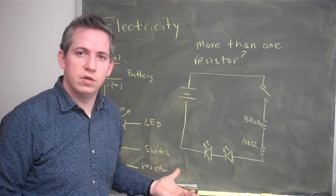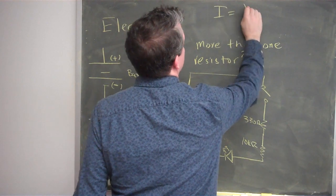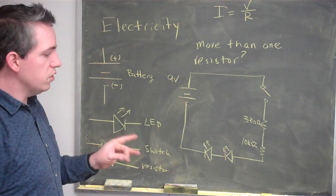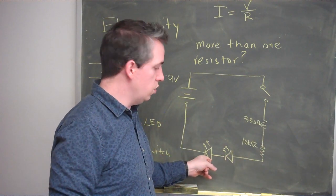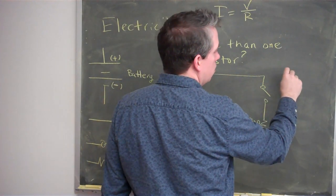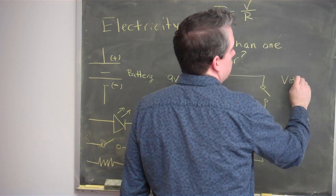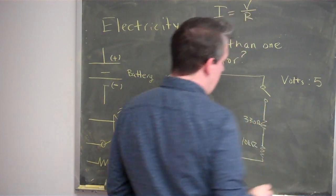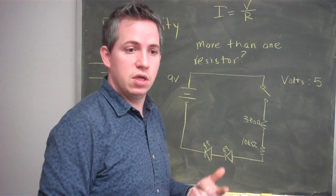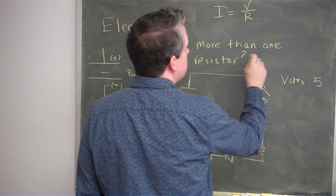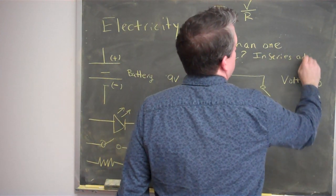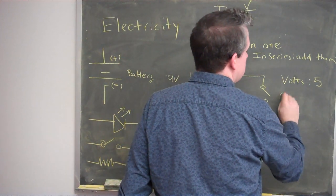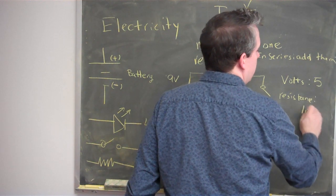One of the questions you can ask yourself is: how do I figure out the current now? Remember Ohm's Law says the current equals the voltage divided by the resistance. So this is a 9-volt battery. The first thing you do is recognize this is a series circuit with two LED light bulbs. So the total voltage would be 9 minus 2 minus 2, or 5 volts. And in series, the resistance is equal to the sum of the resistances — you just add them. So I've got 10,000 plus 330, giving me 10,330 ohms.